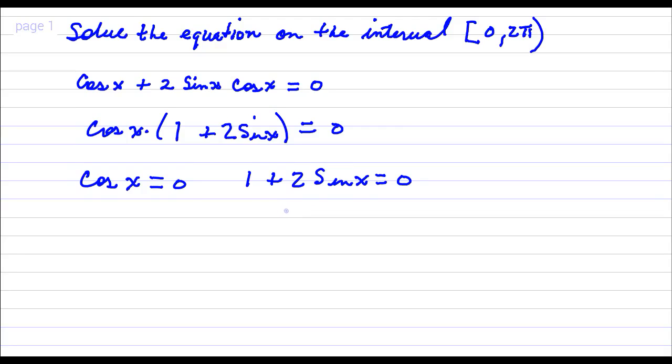Subtract 1 from both sides, that will leave me with 2 sine x equals negative 1, and then I'll divide both sides by 2, and that leaves me with sine x equals negative 1 half.